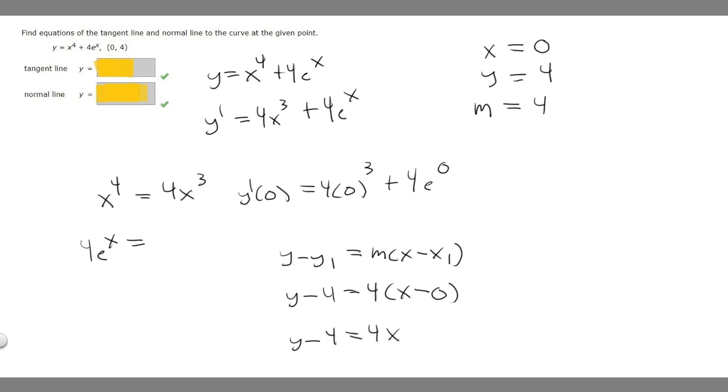We have y minus 4 equals 4x. 4 times 0 is 0, so I won't write that. Then we add 4 to both sides. We have y equals 4x plus 4. And so this is our tangent line: y equals 4x plus 4.